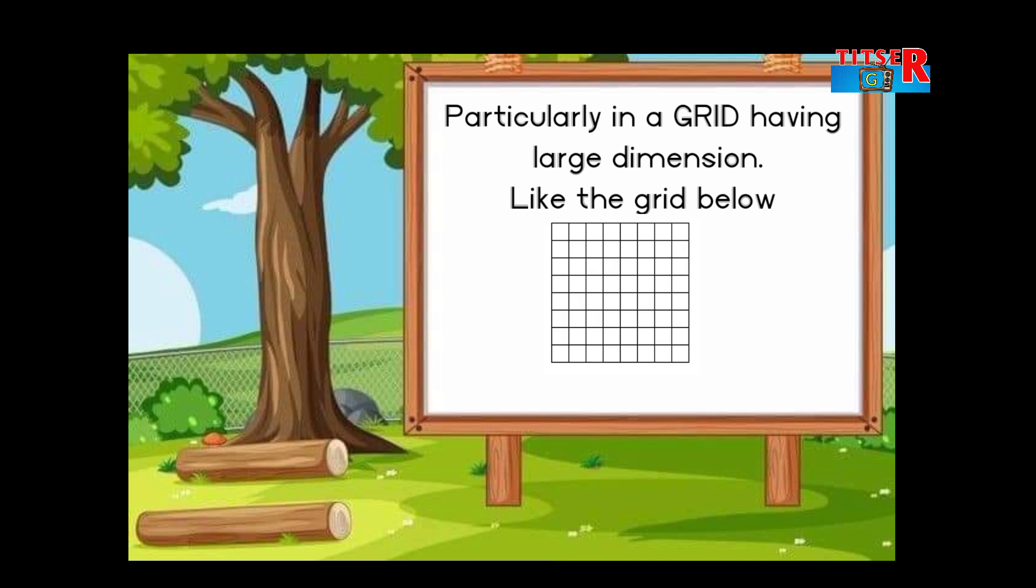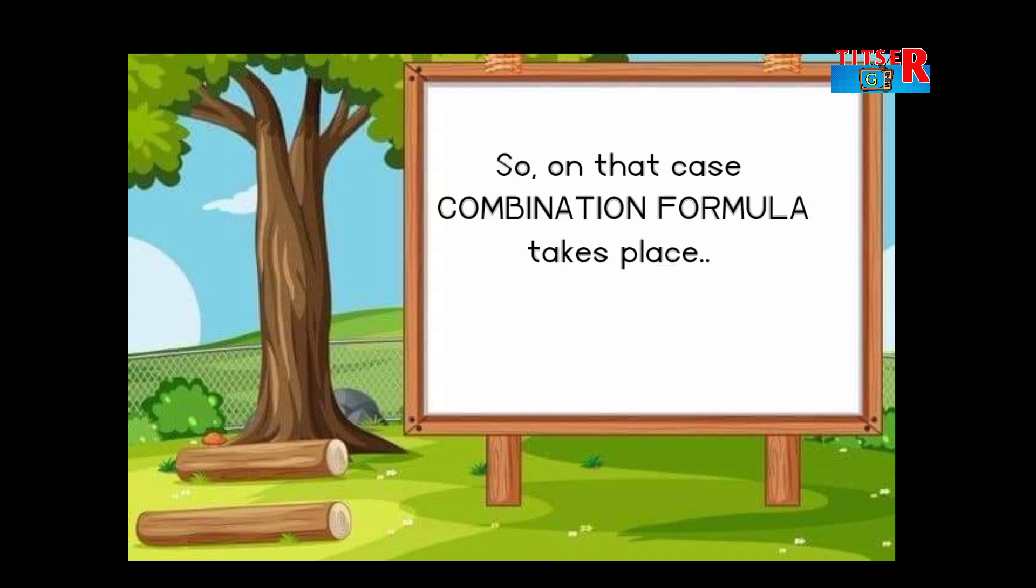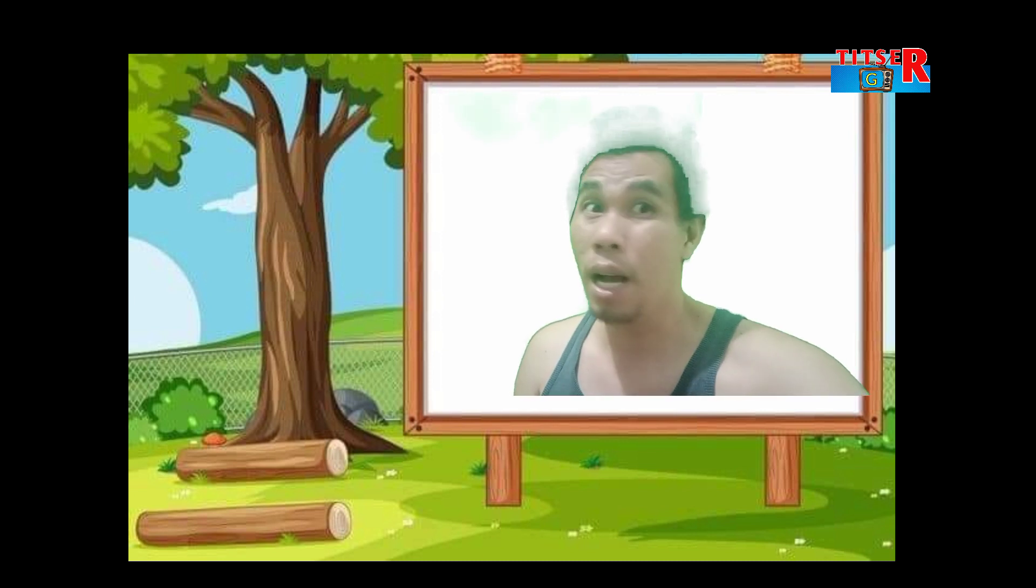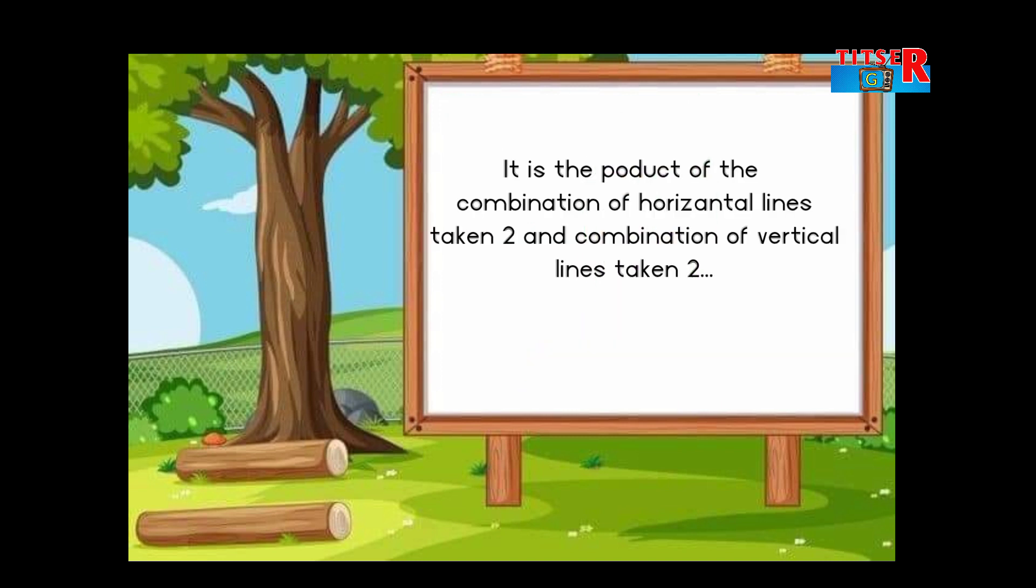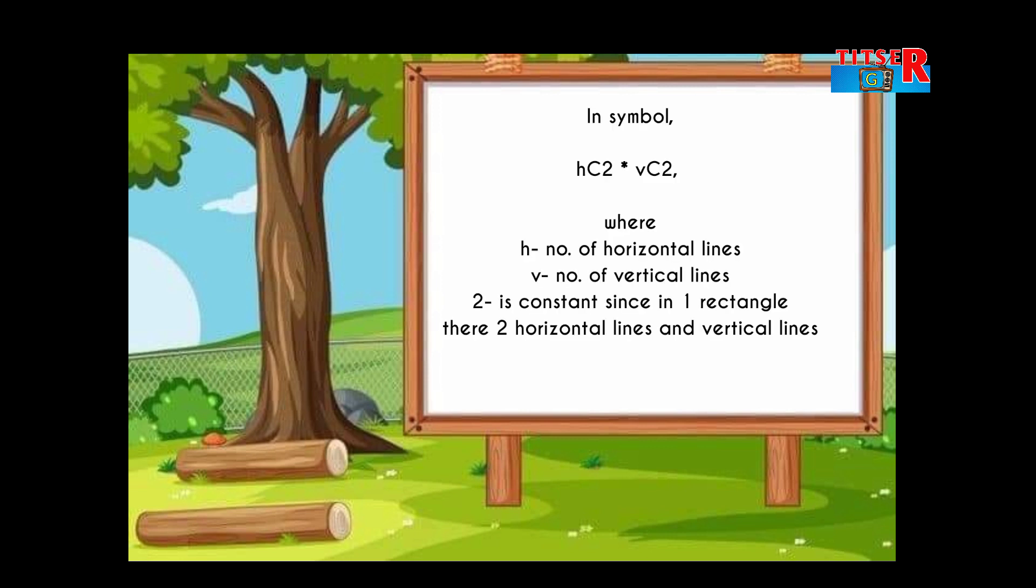In that case, the combination formula takes place. It is the product of the combination of horizontal lines taken two and combination of vertical lines taken two. In symbols: HC2 times VC2.